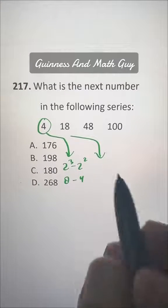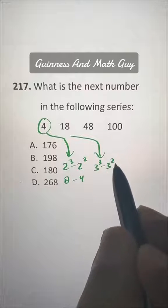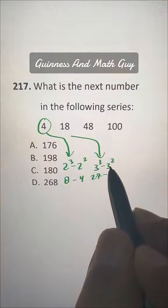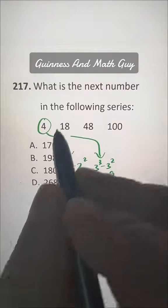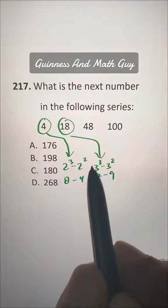This 18 is 3 cubed minus 3 squared. 3 cubed is 27 minus 3 squared is 9. 27 minus 9 is 18. Now you get the pattern.